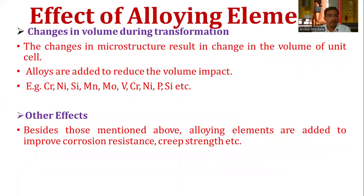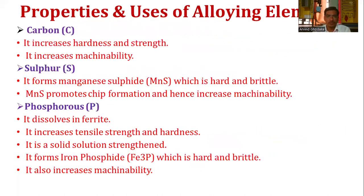Beside those effects, alloying elements are also added to improve corrosion resistance and creep strength. Regarding properties and uses of individual alloying elements: carbon increases hardness, strength, and machinability. Sulfur forms manganese sulfide (MnS), which is hard and brittle, and provides chip formation that increases machinability.